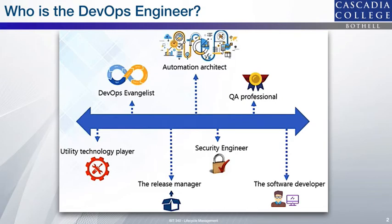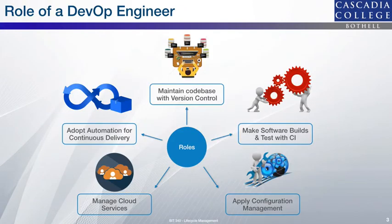Generally speaking, tasks associated with DevOps are subdivided into five different and complementary categories as shown. These are: maintaining code base with version control, making software builds and tests with continuous integration, applying configuration management, managing cloud services, and adapting automation for continuous delivery.